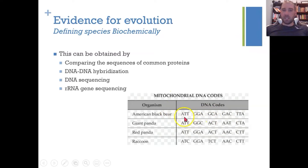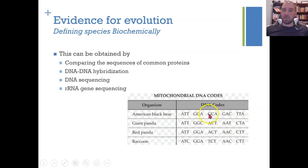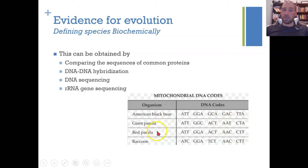Looking at the black bear, we can see there's an A, a G, an A, a G, and a T that are different — several differences suggesting a decent amount of time between the American black bear and the giant panda. Comparing the giant panda with the red panda, there are only three differences, so these would have separated from each other much more recently.